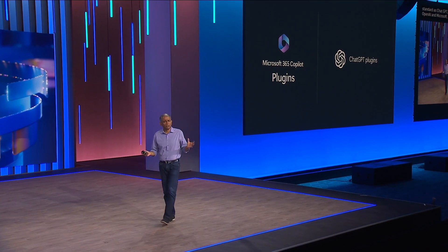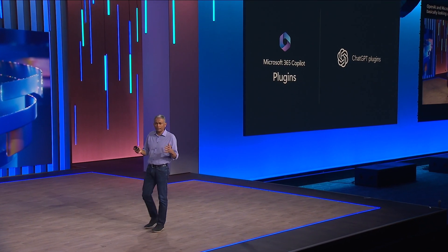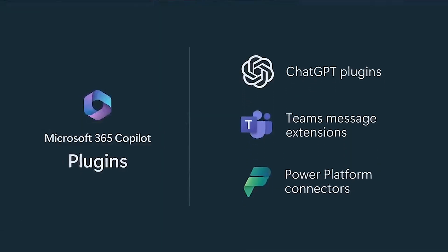All while preserving the integrity of your app experiences and attribution to its content. All you need as a developer is an open API and a manifest, and you can create a plugin. That plugin works in ChatGPT, it works in Bing, it works in Microsoft 365, and more. We are excited to have thousands of plugins available for Microsoft 365 Copilot.